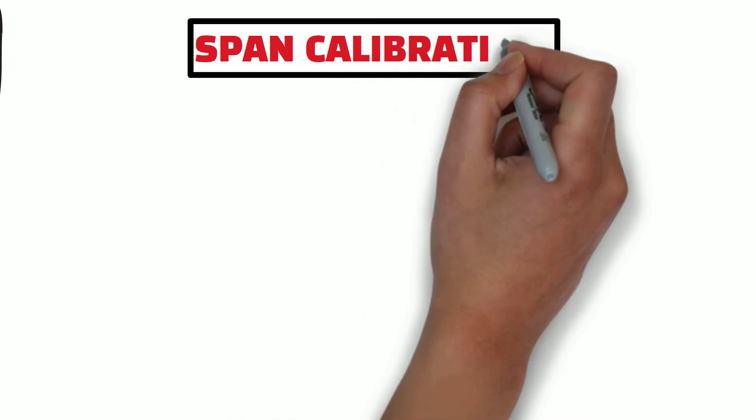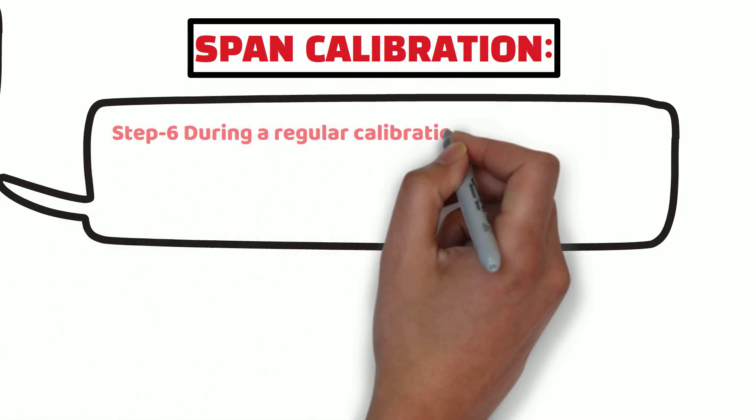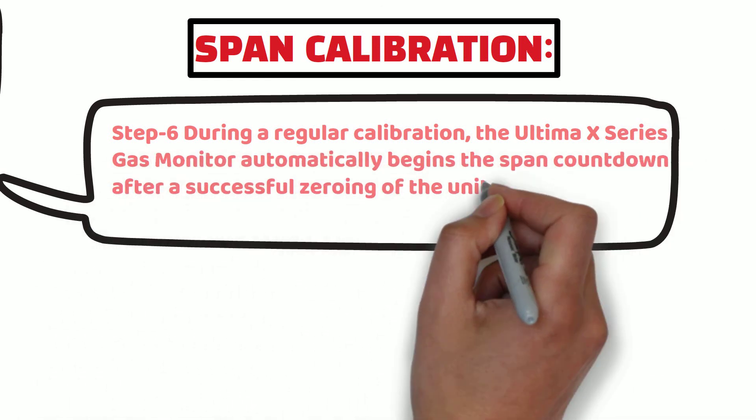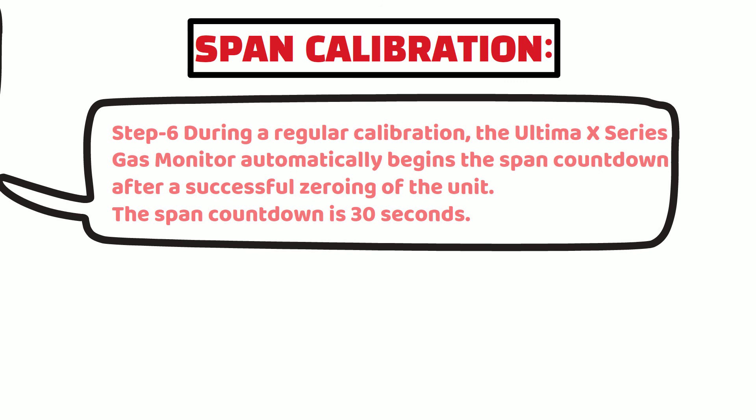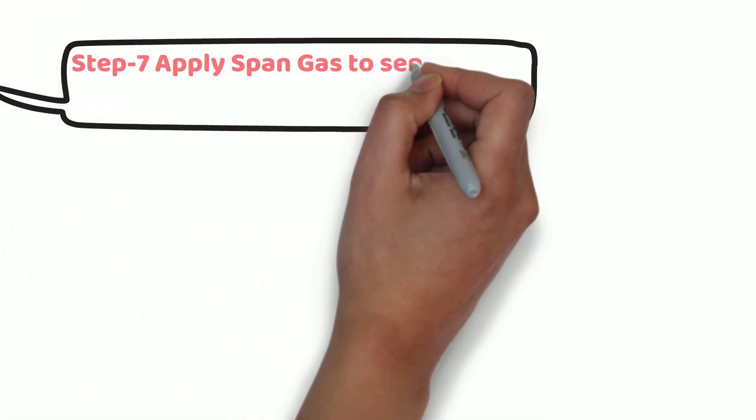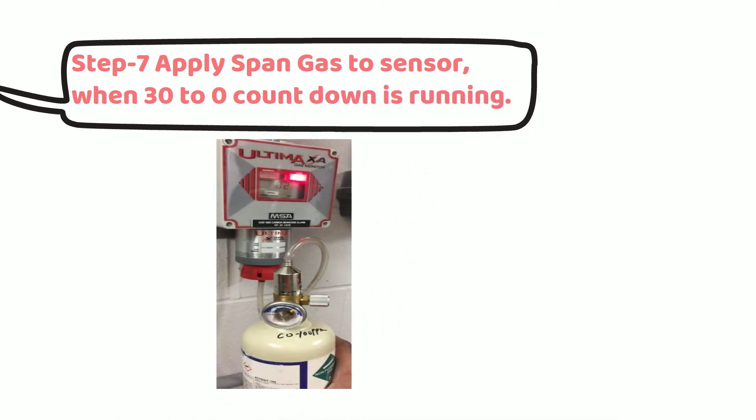If the zero calibration is successful, gas monitor automatically begins the span countdown. Span countdown is 30 seconds. Now apply span gas to sensor when 30 to zero countdown is running. Make sure that you apply correct concentration gas to sensor.